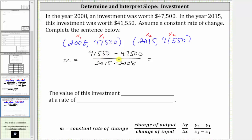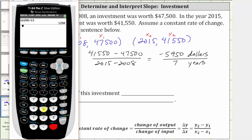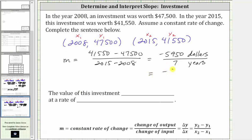$41,550 minus $47,500 is negative 5,950, divided by 2015 minus 2008, which is seven. The units are dollars and years. Negative 5,950 divided by seven is equal to negative 850. Therefore the constant rate of change is negative $850 per year. Notice the constant rate of change is negative, so the investment has decreased in value — which we can see because it went from $47,500 to $41,550.